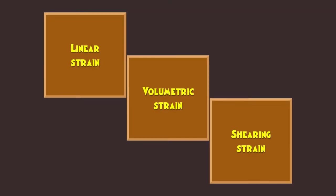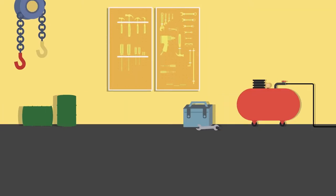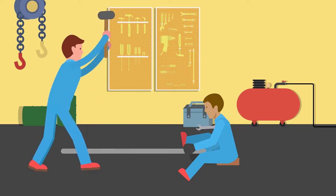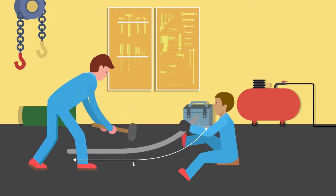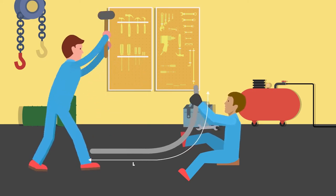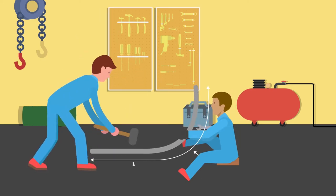The strain has three types. Let me explain this scenario in a mechanical workshop. Consider an iron pipe which is about to get a change in its shape. The change in length here is linear strain.